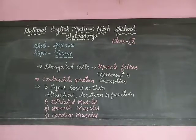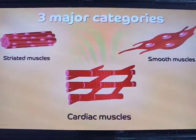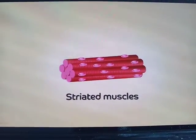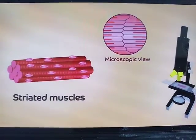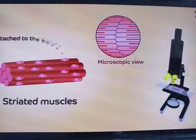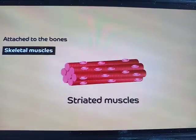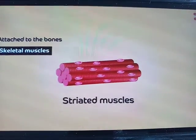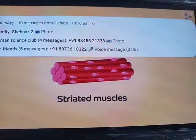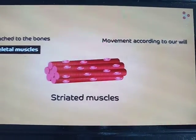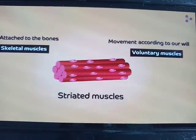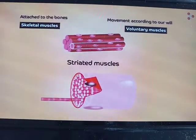Let us learn these three categories in detail. When we study striated muscles and observe them under a microscope, they show striations in the form of light and dark bands. These tissues are attached to the bones, hence they are also called skeletal muscles. They help in movement and locomotion under our control, so they are also called voluntary muscles. Striated muscles are long, cylindrical, unbranched, and multinucleate.